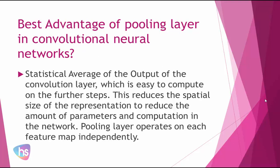What is the best advantage of a pooling layer in convolutional neural networks? The pooling layer computes the statistical average of the output of the convolution layer, which is easy to compute in further steps. This reduces the spatial size of the representation to reduce the amount of parameters and computation in the network. The pooling layer operates on each feature map independently.